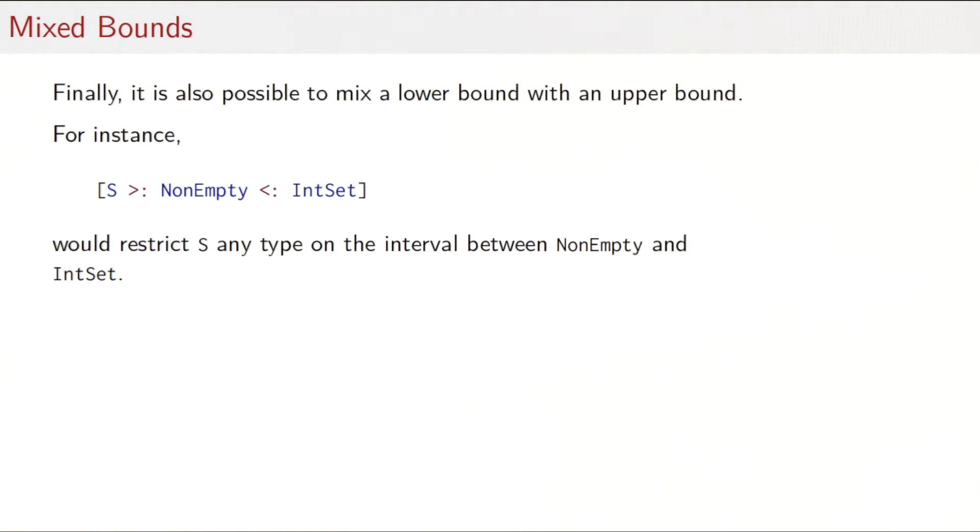Finally, it's also possible to mix a lower bound with an upper bound, so that you would write like here. You could say S is bounded from below by NonEmpty and from above by IntSet. And that would then restrict any actual argument for S to a type that's in the interval between NonEmpty and IntSet. In our case, that interval actually contains only the two types, NonEmpty and IntSet, because we have this inheritance relationship. But in general, there could of course be more types between the lower bound and the upper bound.